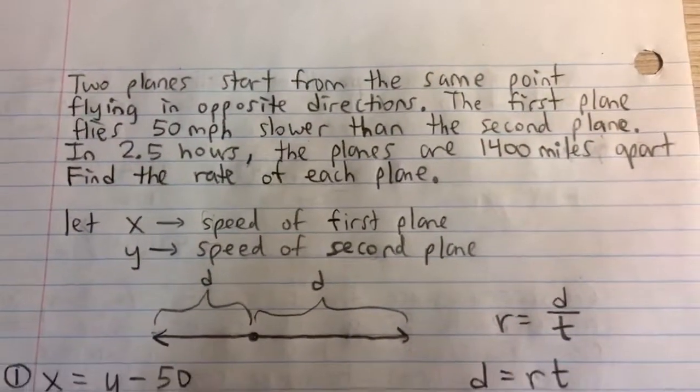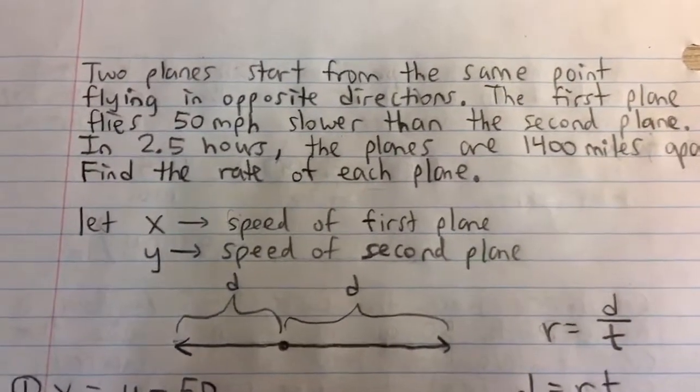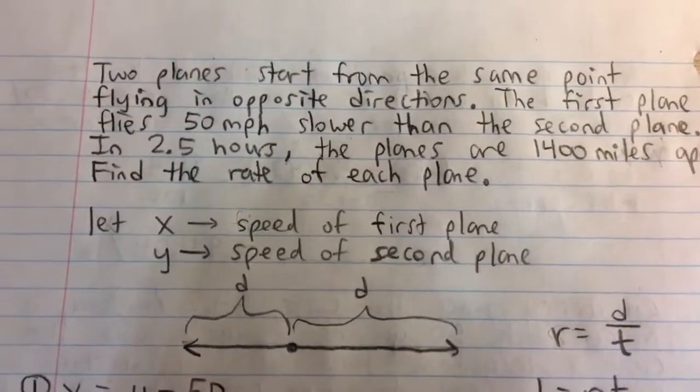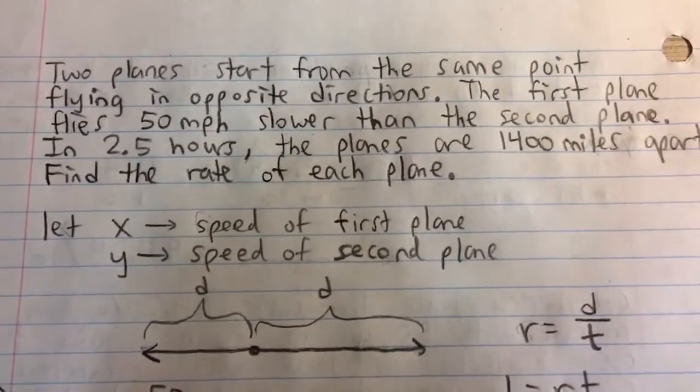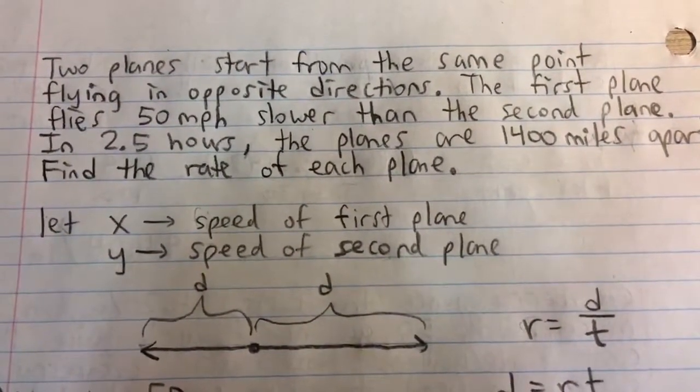So by the rate here, they mean the speed or how fast each plane is going. First off, let's set some variables because these are the things we're trying to find. Let's let x be the speed of the first plane and y be the speed of the second plane.